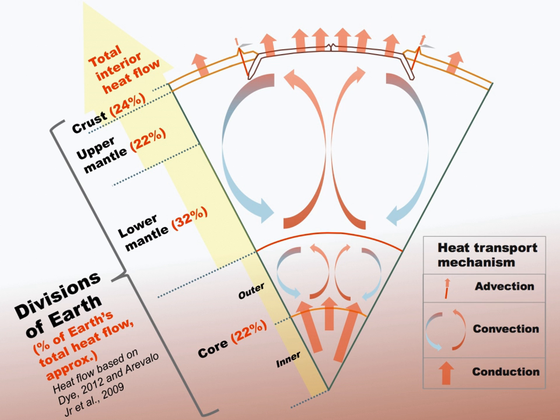In 2009, B. Buffett estimated the viscosity of the inner core at 10^18 pascal seconds, which is a sextillion times the viscosity of water, and more than a billion times that of pitch.